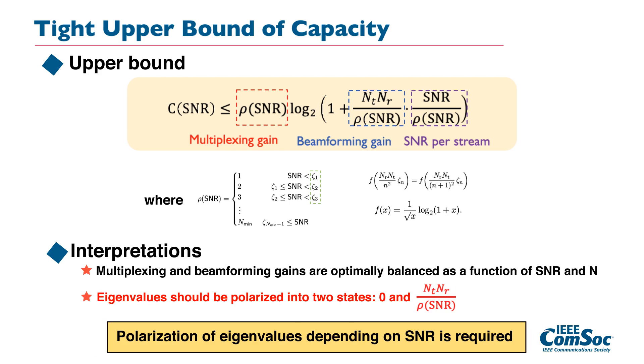And the second observation is more interesting because in order to achieve the upper bound, we need to construct the LOS MIMO channels having the eigenvalues that are polarized in two different states: zeros or all equal non-zero eigenvalues.